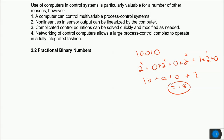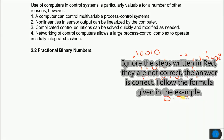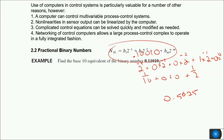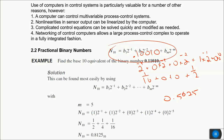Fractional numbers can also be represented in binary form by placing a decimal point in the number. As an example, the base-10 equivalent of binary 0.11010 is 0.8125.